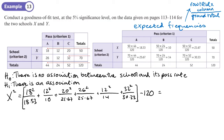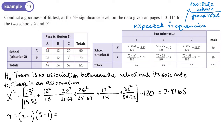We get 120.9165 minus 120, so X-squared equals 0.9165 — that's quite low. Now we need the degrees of freedom. We have two rows and three columns, so that's (2−1) times (3−1) = 1 times 2 = two degrees of freedom. We're going to look up chi-squared with two degrees of freedom and five percent significance level.